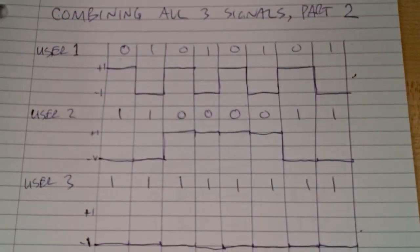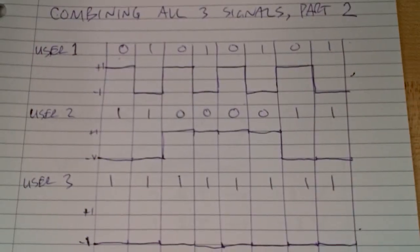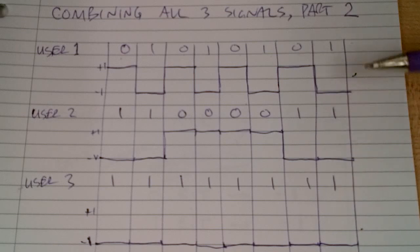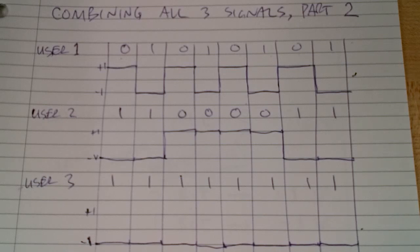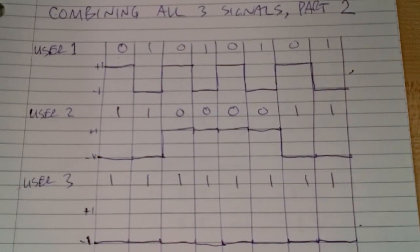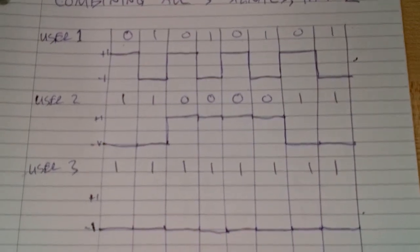We have user one, user two, and user three. We've created waveforms representing each user. But if all these users use the same frequency at the same time, the resulting signal would be all three signals added together. So that's what we'll do.